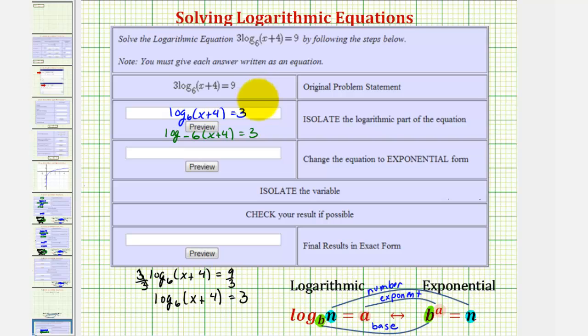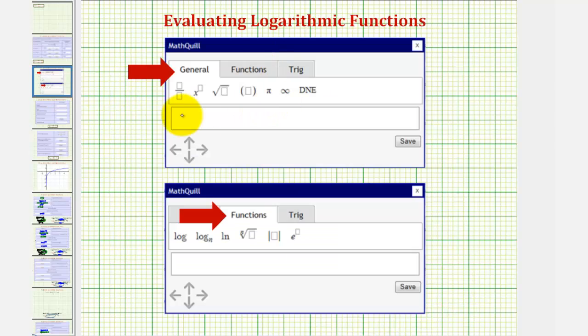Or if we click in the answer cell and then click on the small yellow arrow on the right, it brings up this math palette. If we click on the functions tab, we can select this option here and then change the base to six, enter the equation, and click save.